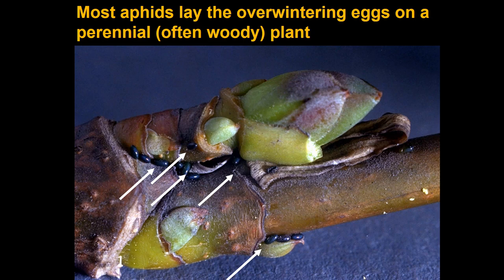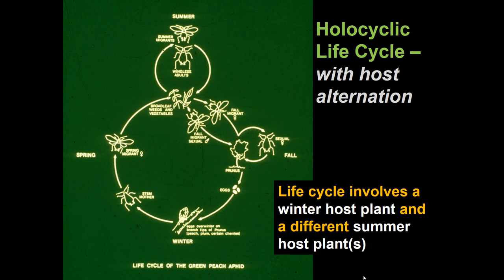The overwintering egg allows the insect to survive between seasons. In most situations, that aphid would lay eggs on a perennial plant — a tree or shrub that will be there next year. When buds break and eggs hatch, the aphids are ready. Occasionally they'll lay on an herbaceous plant, and the eggs hatch near a volunteer plant. But normally they lay on a perennial winter host. This life cycle involving host alternation can get quite complicated.